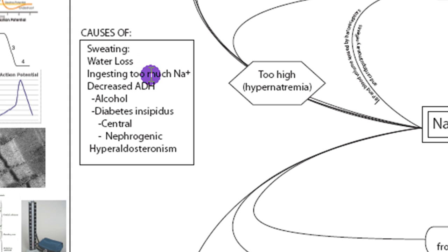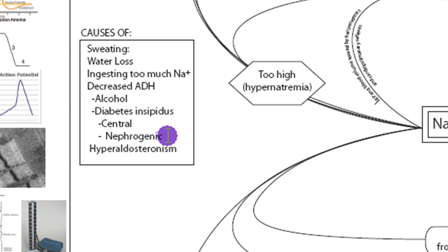Ingesting too much sodium will also cause hypernatremia, although ADH is very good, usually, at offsetting any increase in sodium. If you do inhibit ADH — whether through alcohol or diabetes insipidus, which could be either damage to the system (central diabetes insipidus) or the nephron not responding to ADH — in either case, lack of ADH means lack of water uptake, which means you're going to concentrate your sodium and cause hypernatremia. In hyperaldosteronism, your endocrine system produces too much aldosterone, so you'll take up too much sodium, leading to hypernatremia.